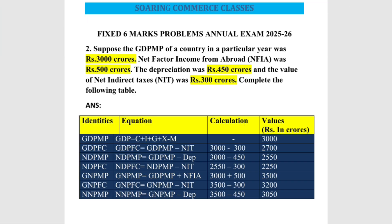The second identity is GDP FC. The equation for GDP FC is: GDP FC = GDP MP − NIT. So GDP FC = 3000 − 300, which gives us 2700 crores.